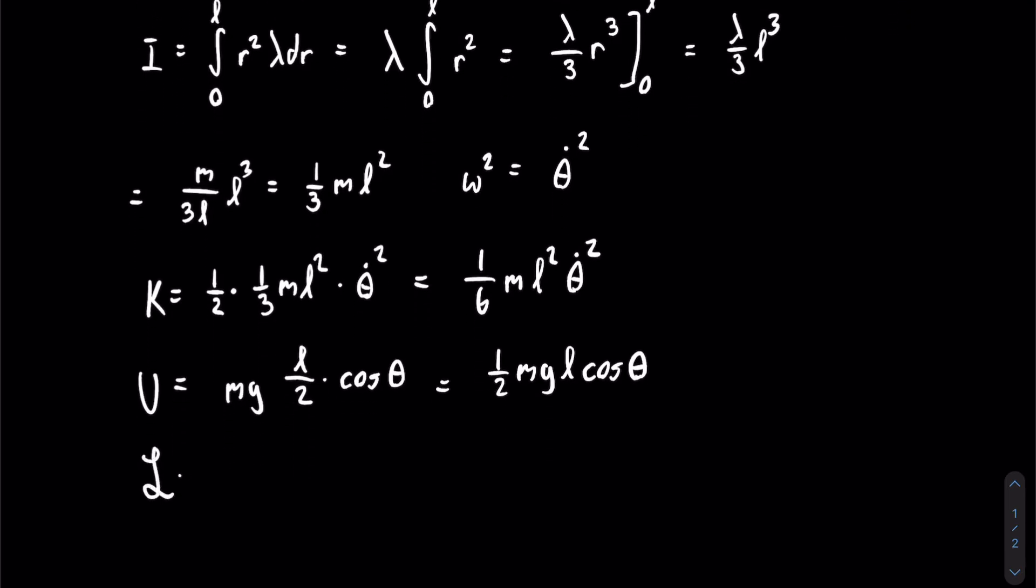We now have everything we need to form our Lagrangian. Remember, the Lagrangian is equal to the difference between kinetic and potential energies. This is equal to one-sixth mL squared theta dot squared minus one-half mgL cosine of theta.